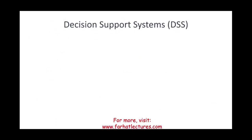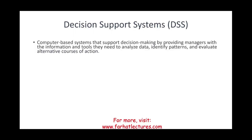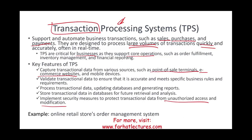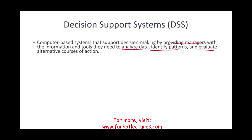Another system is the DSS, or Decision Support System. These are computer-based systems that support decision-making by providing managers with information and tools to analyze data, identify patterns, and evaluate alternative courses of action. DSS is more advanced than TPS. The TPS handles routine transactions — sales, purchases, payments — that happen on a regular basis. The DSS is for analyzing data, identifying patterns, and evaluating alternative courses of action. Think of TPS as used by employees, and DSS as used by middle-level management.